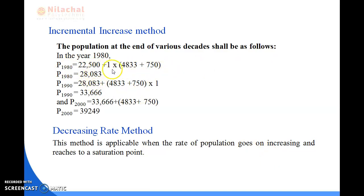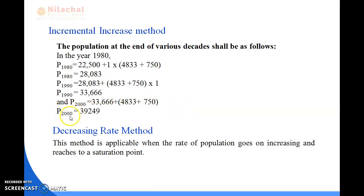For 1990: P1990 = 28,083 + 1*(4,833 + 750) = 33,666. For 2000: P2000 = 33,666 + 1*(4,833 + 750) = 39,249. We will be discussing the decreasing rate method in the next class. Thank you.